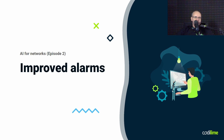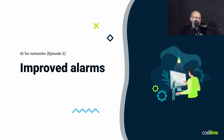Hello, my name is Tomasz and I am a solution architect at Codilime. Welcome to part 2 of our series on AI for networks, in which we would like to show you some examples and ideas on how to benefit from using artificial intelligence and machine learning techniques. The first part about network capacity planning is already up on our channel, so you can watch it right after this video.